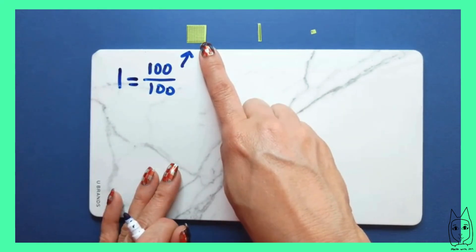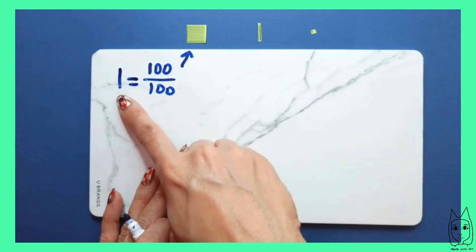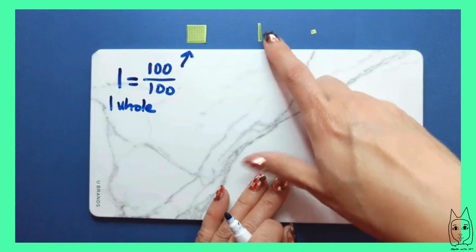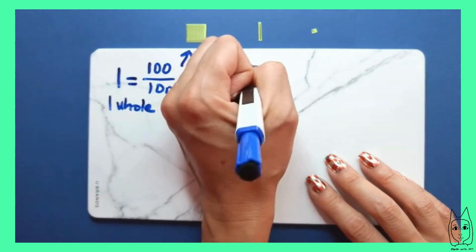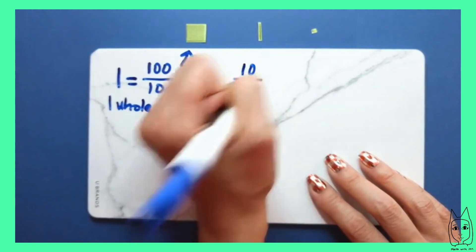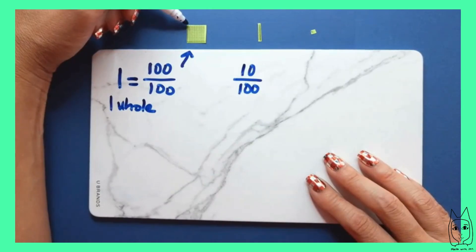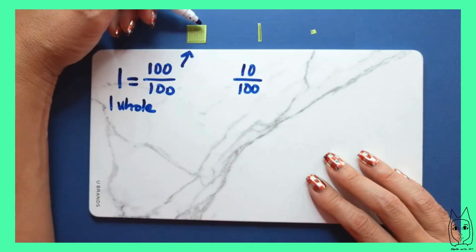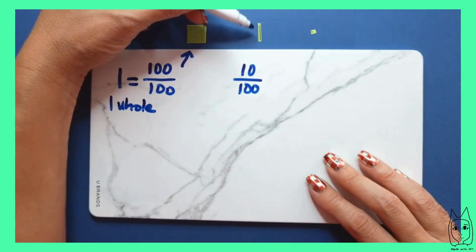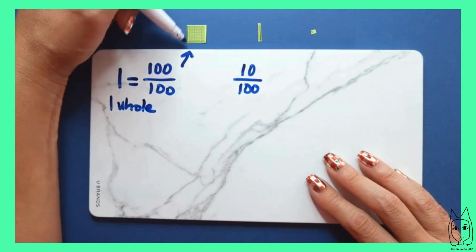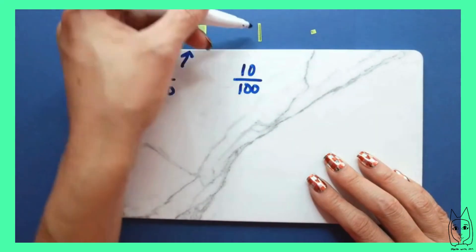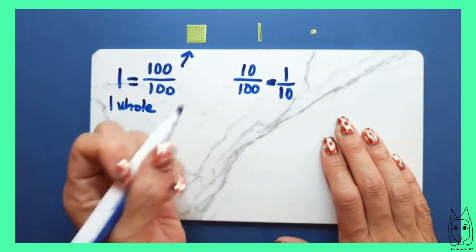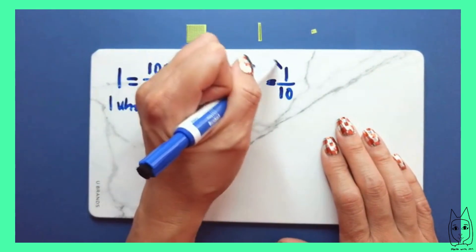We will be using the hundred grid model to represent one whole, and we will also be using this bar, which has 10 parts — 10 of the one hundredths. Ten hundredths make up a tenth. This ten hundredths is also equivalent to one tenth, so we will be referring to these bars as one tenth.